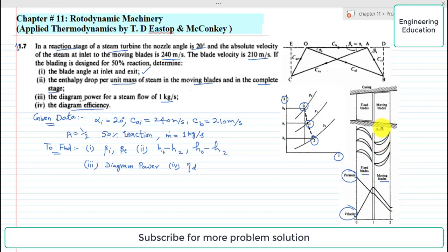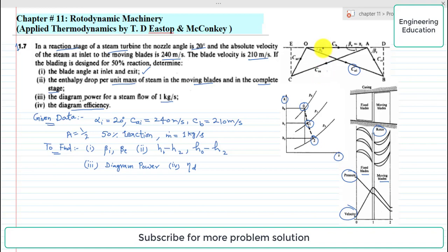For the moving blades, we draw the velocity triangle. The notations are similar to impulse turbines: C_Ai is the absolute velocity at inlet, C_Ri is the relative velocity at inlet, C_Ae is the absolute velocity at exit, and C_Re is the relative velocity at exit. Alpha_i is the nozzle angle that the absolute velocity makes with the blade speed direction along the x-axis. Beta_i is the blade angle at inlet and beta_e is the blade angle at exit.